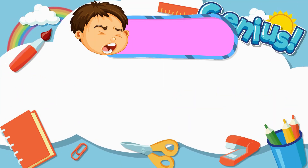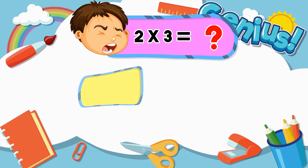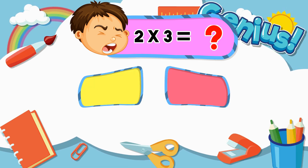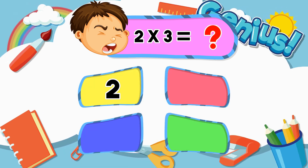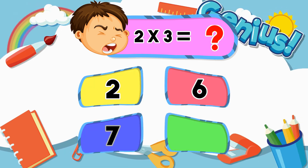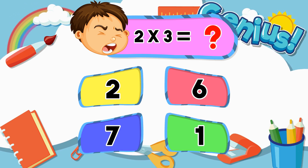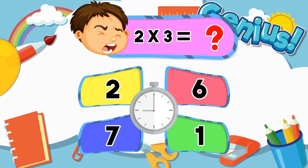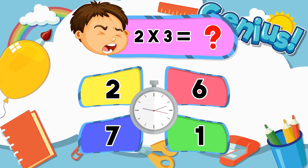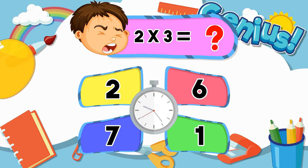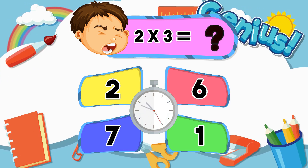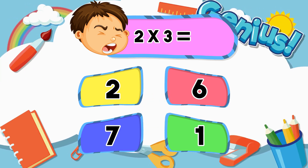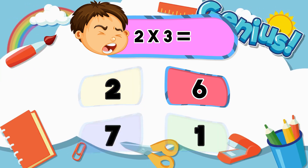What is two times three? Two, six, seven, one. Six.